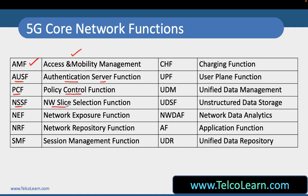NSSF takes care of network slice selection. NEF is for network exposure. NRF is the Network Repository Function, which is like a yellow pages for all the producer NFs that are available. SMF, the Session Management Function, takes care of creation, maintenance, and termination of sessions. CHF is the Charging Function. UPF is the User Plane Function, which typically gets user data from the gNodeB and sends it to the PDN or DN in the case of 5G, and the other way around as well. UDM is the management part for unified data.